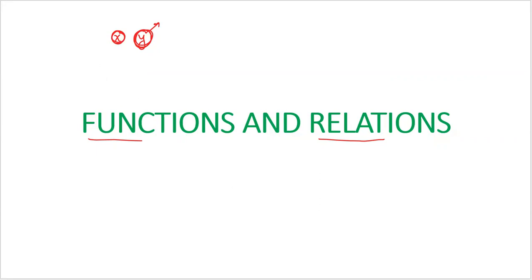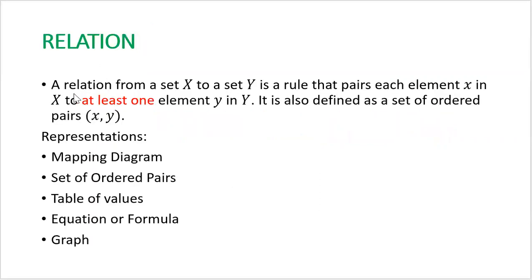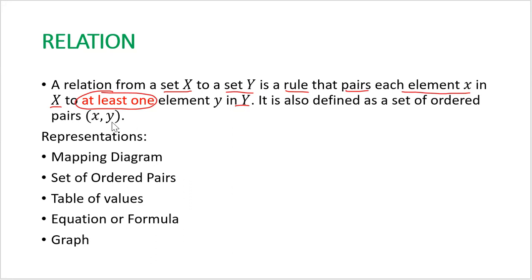So what are relations and functions? Let's define a relation first. A relation from a set x to a set y is a rule that pairs each element x in the set x to at least one element y in the set y. This relation is also defined as a set of ordered pairs (x, y). So anything that pairs elements of x and elements of y is considered a relation.